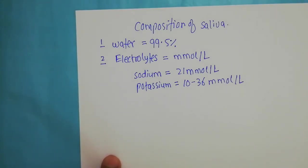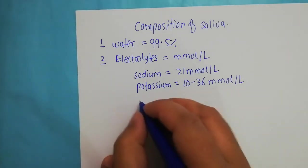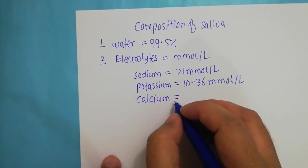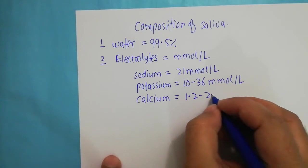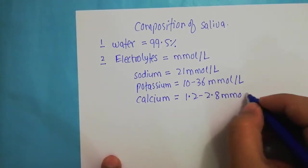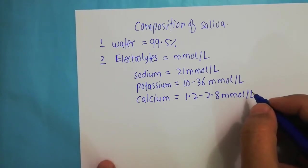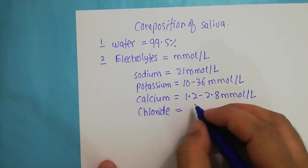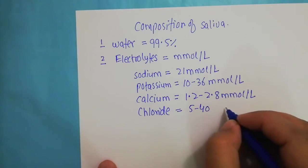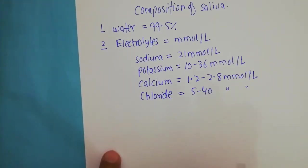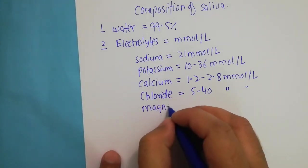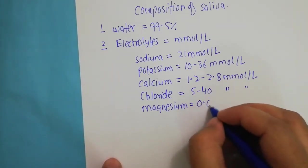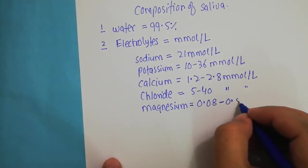Another important component is calcium, with a concentration ranging from 1.2 to 2.8 millimoles per litre. Then there are chloride ions, with a concentration in the saliva between 5 to 40 millimoles per litre.